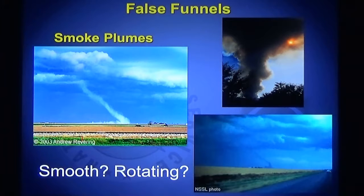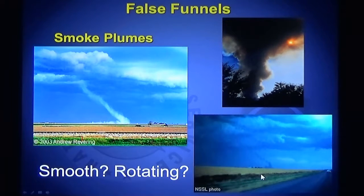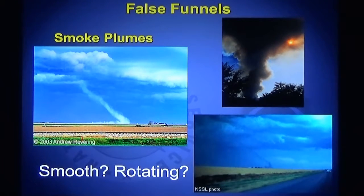Here's more false funnels. In the picture to the left, this is actually a fire burning and the smoke is rising off the fire and into the thunderstorm — this is smoke, not a tornado. Same thing in the top right: that's a fire burning and this is the smoke rising into the atmosphere — no circulation, no tornado. And in the bottom right photo, the same thing: a fire is producing smoke rising into the thunderstorm. Sure looks like a tornado, but there was no rotation, so it was not a tornado — it was fire smoke rising into the storm.